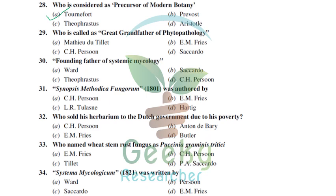Even though Tournefort first gave the pure concept and definition of genus in 1705, later in 1735 and the 1750s–1760s, Carolus Linnaeus introduced the binomial system of nomenclature. The old naming system was very long and difficult to pronounce, so Linnaeus simplified it to a genus name and species name — making it much easier.